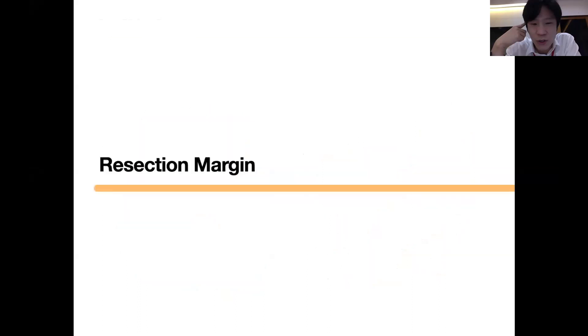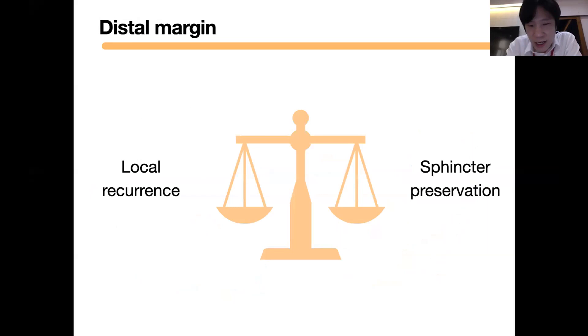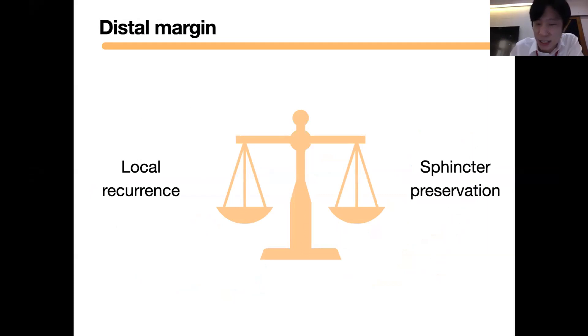The resection margin of rectal cancer has two aspects to consider. First is the distal margin, and second is the circumferential resection margin. For the distal resection margin, you have to weigh local recurrence against sphincter preservation. If you want to preserve the sphincter in a case that is not appropriate, you may face local recurrence instead. So you have to weigh the risk and benefit of sphincter preservation.